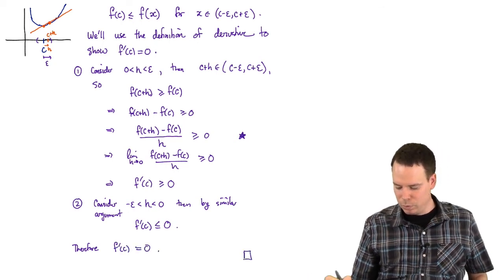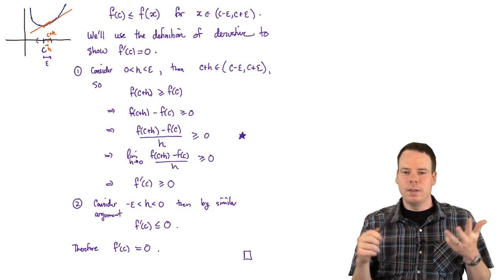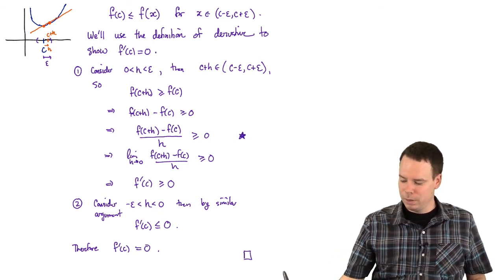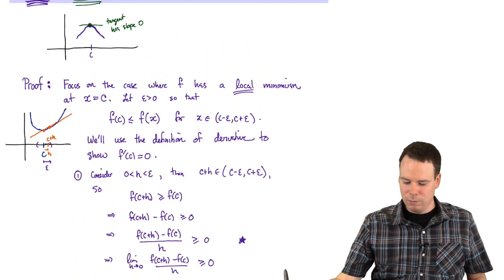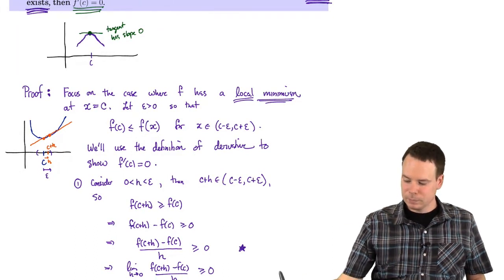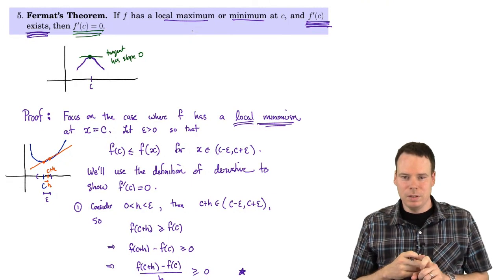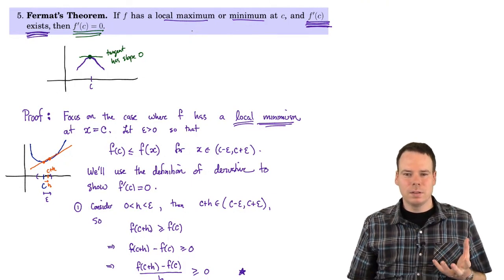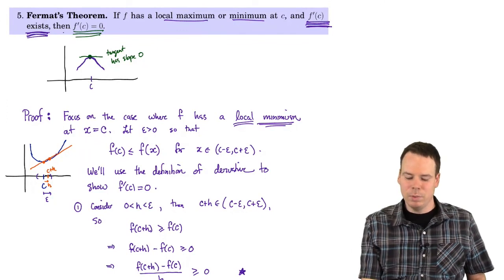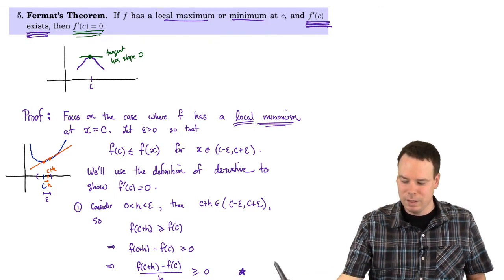That's the statement we wanted to prove: if you have a local maximum or local minimum at a place where the derivative exists, then the derivative has to be zero there. We've proven that now, and an identical argument works for the local maximum case as well. So Fermat's theorem gives us some candidates for where to look for a maximum or minimum — it tells us to look where the derivative is zero. But that won't capture them all, and we'll need a little bit more.